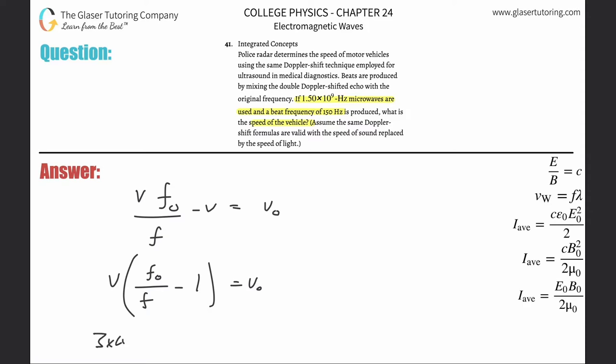That's going to be the microwave, 3 times 10 to the 8, that's the speed of light. Frequency of the observer will be the original frequency of 1.5 times 10 to the 9th plus the beat frequency of 150, divided by 1.5 times 10 to the 9th, and that whole thing is minus one, and this is the velocity.